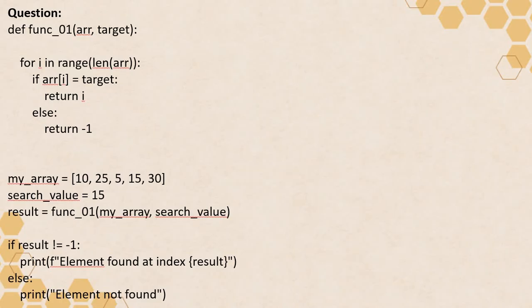This particular question is up to a moderate level and it is written in Python. It is a very easy question for those who are good with Python, but moderate for those who are not. They have defined a function called function_01, with parameters and a logic for the function. Then there is a driver code where the function is called, some task is performed, and some output is printed. This is the control flow of the entire question.